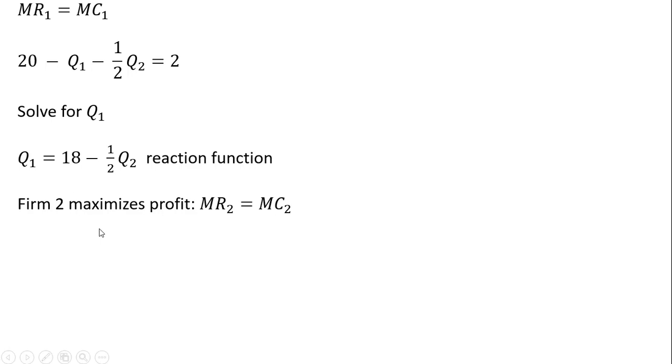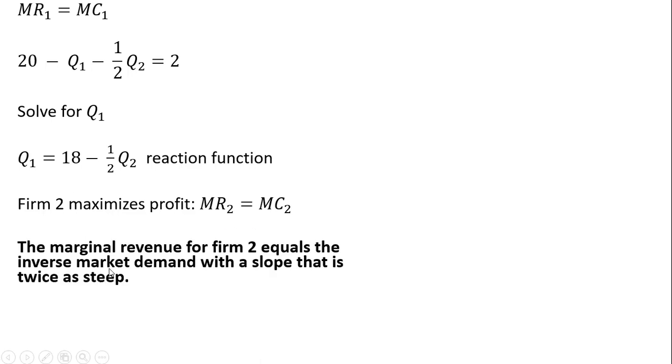Let's do a similar thing now from firm 2's perspective. Firm 2 maximizes profit by setting the marginal revenue equal to marginal cost. So once again, the key idea here is that marginal revenue will equal the inverse market demand with a slope that is twice as steep. So recalling what the inverse market demand is. And since this is firm 2, we're going to look at Q subscript 2 and they're just going to multiply what's in front of it by 2. So minus 1 half times 2 just leaves us with Q subscript 2.